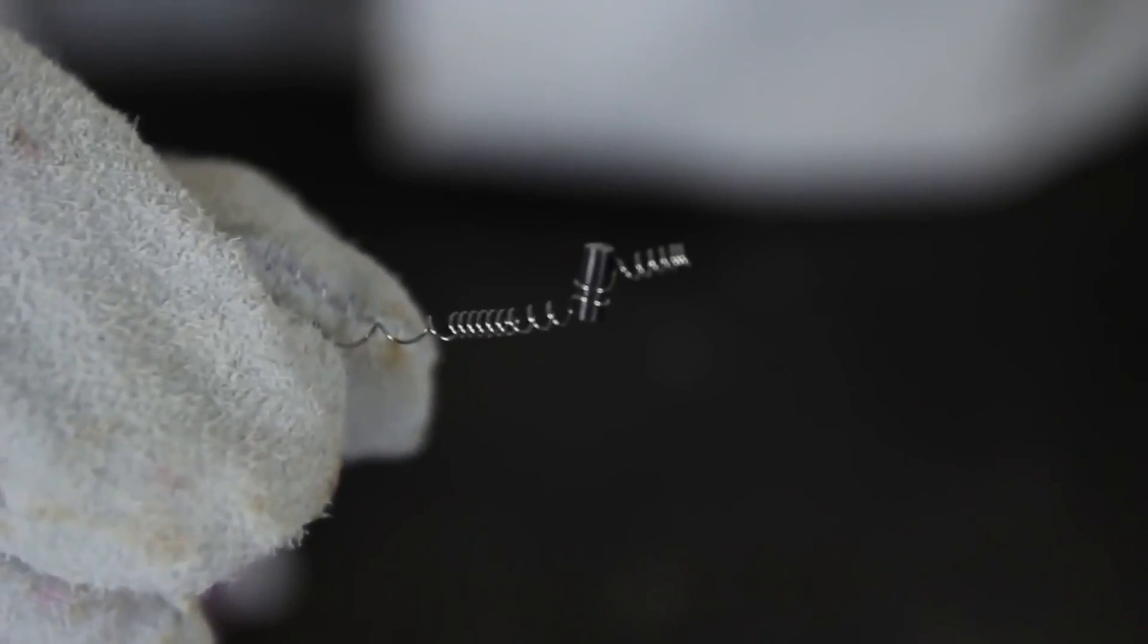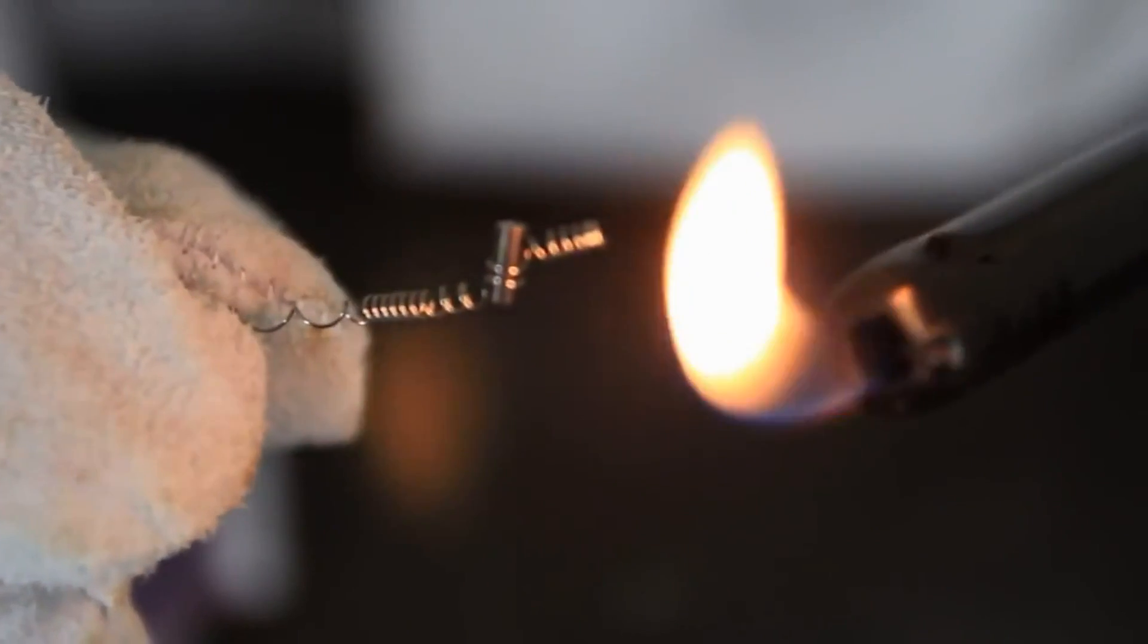As you can see, I got flint right here. I'm gonna heat it up with the lighter and throw it on the ground. Let's see what happens. First, I'm gonna heat it up till the flint is red. See how it turned red? Now I'm gonna throw it on the ground.